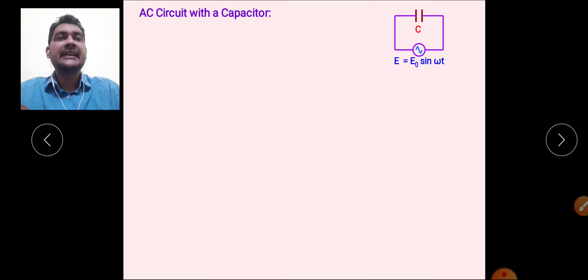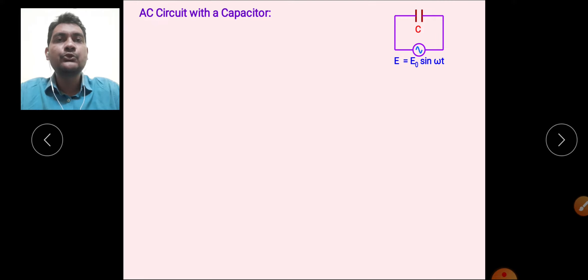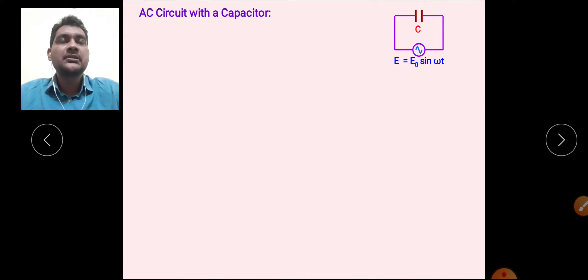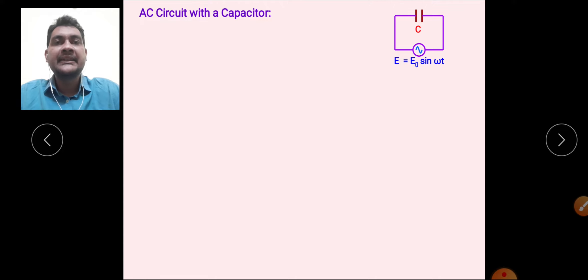This is an AC circuit with a capacitor. A capacitor is a device used to store charge. Capacitors may have various shapes — parallel plate, spherical, or cylindrical — but we generally discuss the parallel plate capacitor. Suppose we have a capacitor whose plates are connected to a source of alternating EMF: e = e₀ sin(ωt).